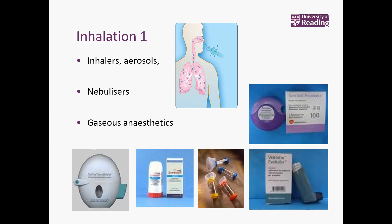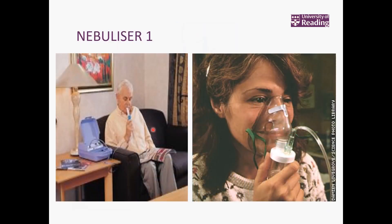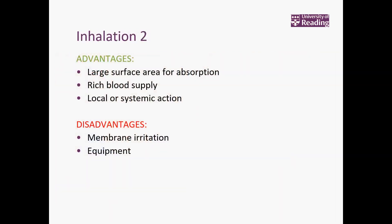When we look at inhalation, this involves the lungs. Inhalation can provide a local effect — affecting the lungs locally — which helps with conditions like asthma. You've probably heard of different inhalers, and inhalation is also used in anaesthesia. You'll also see nebulisers. The advantage is that the lungs have a very large surface area for absorption and a rich blood supply, so it can affect things locally and can also be used for systemic action. Disadvantages include the need for bulky equipment and potential irritation.